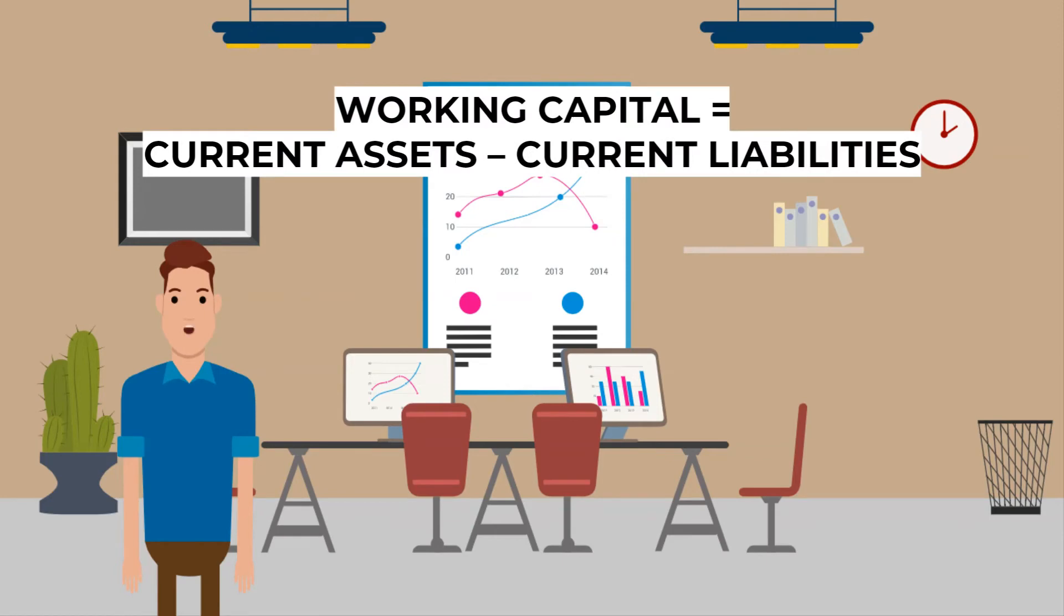The formula for working capital is current assets minus current liabilities. This is because the liquid cash a company has with them will be the liquid or short-term assets they own, less the short-term debts they have to pay.